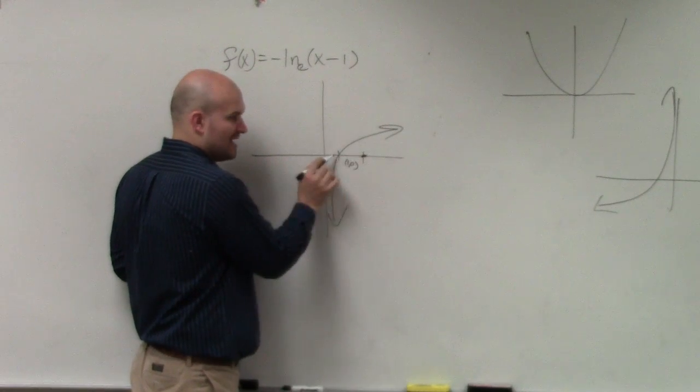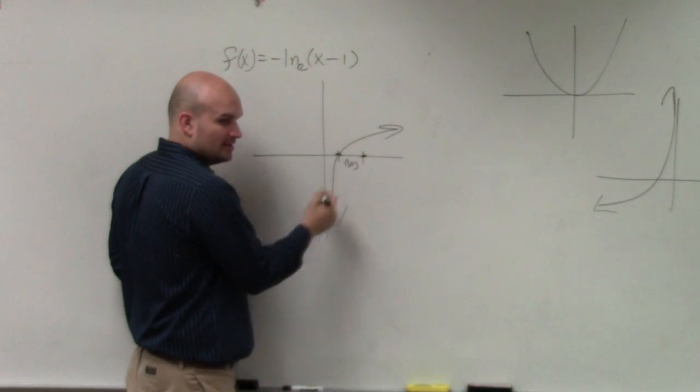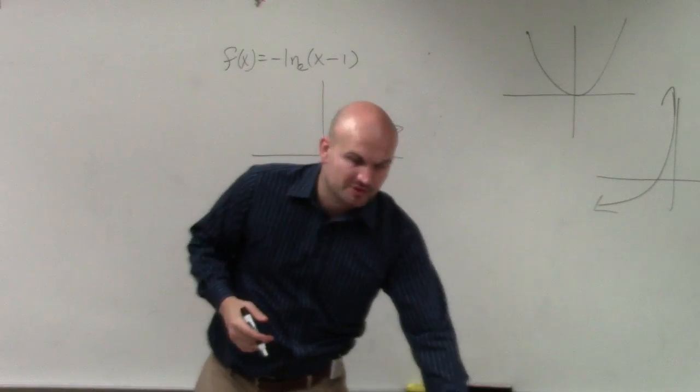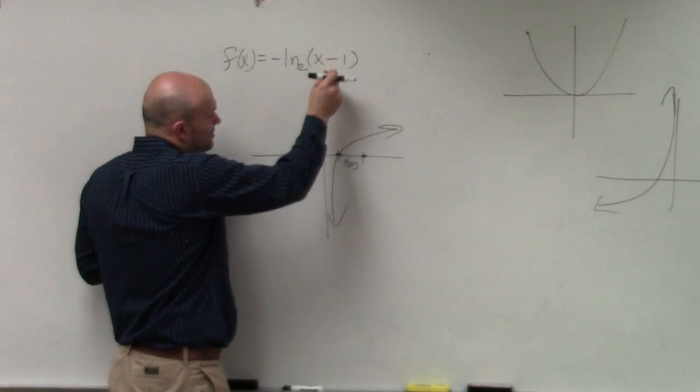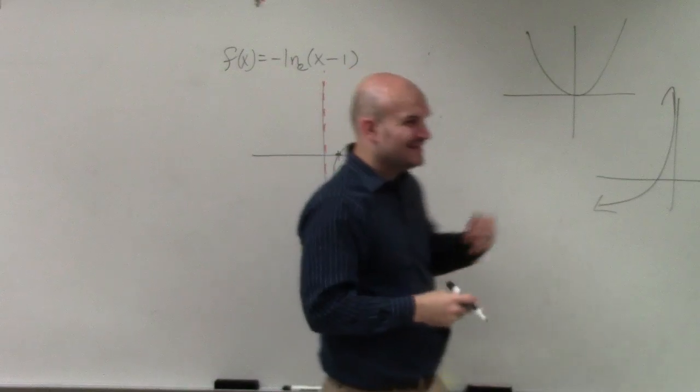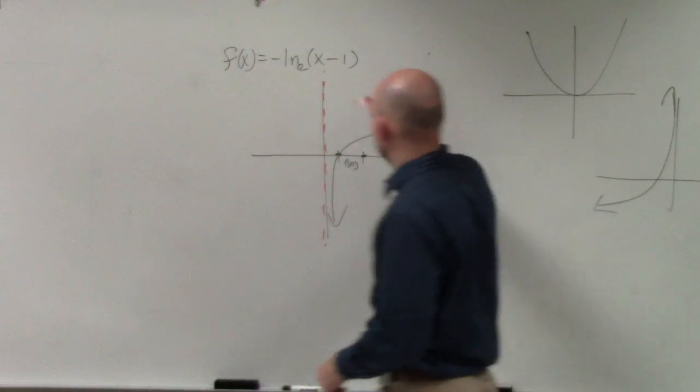So now I'm going to shift my x-intercept over 1. However, remember there is a vertical asymptote. So if I'm shifting my graph over 1, the asymptote also needs to be shifted over 1.